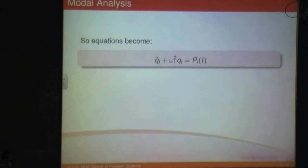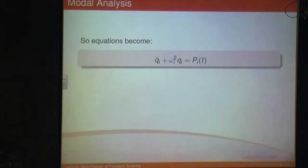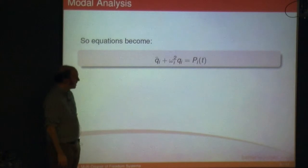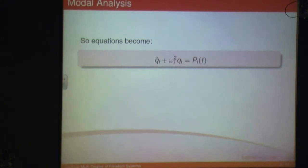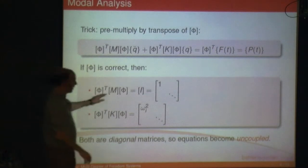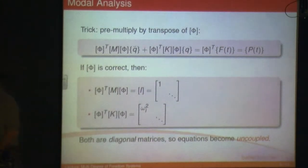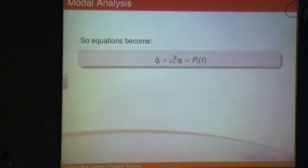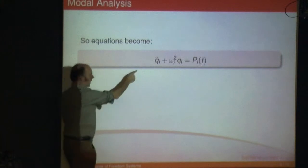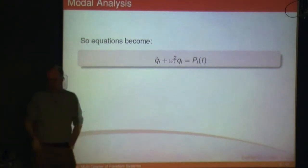The equation becomes, for the i-th mode: q̈i plus ωi² times qi equals pi(t). The p term equals the transpose of φ times your forcing function — that's where the p comes from. So for an undamped system, if you correctly calculate φ, your equation will always be in that form, where your forcing function appears on the right-hand side. It will always be in that form.